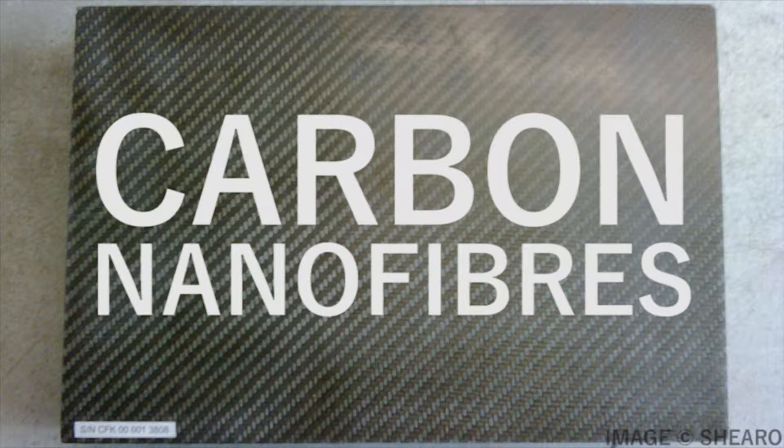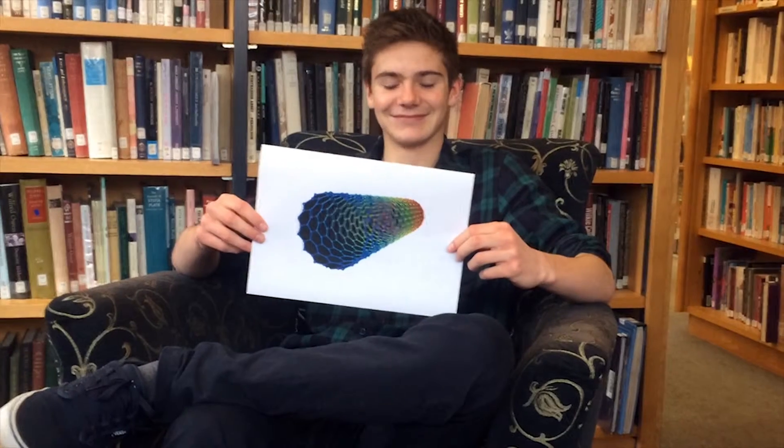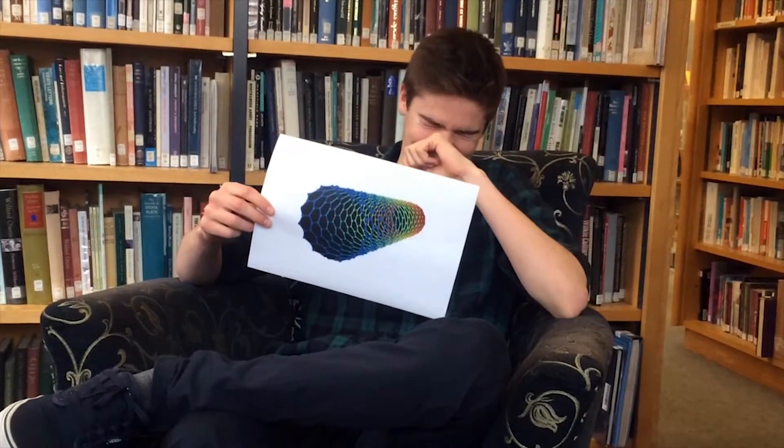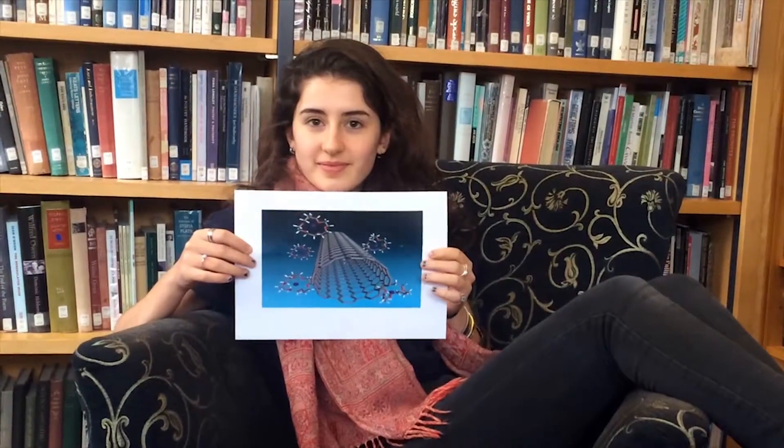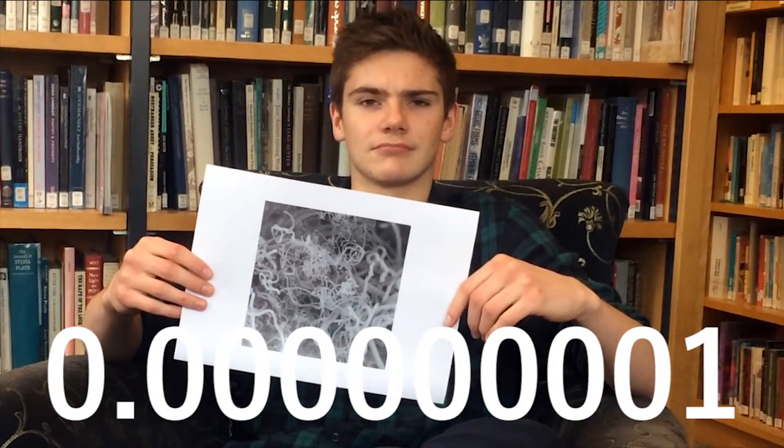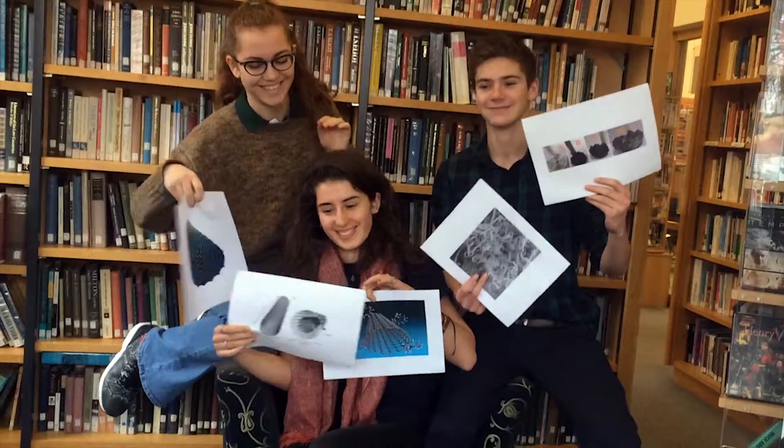Did you know that carbon nanofibers are structures whose surface is around 0.1 to 100 nanometers? If you find it hard to imagine, this is 0.0000000001 meters, one thousand times thinner than a hair.